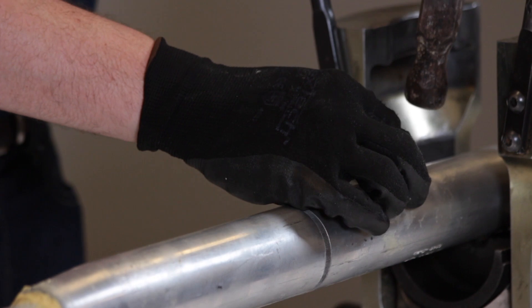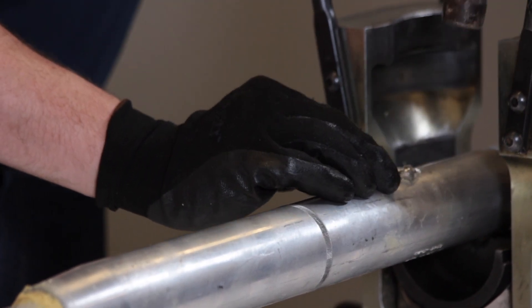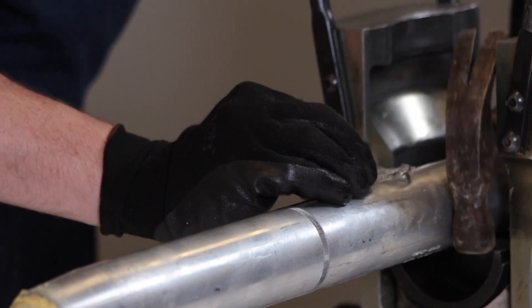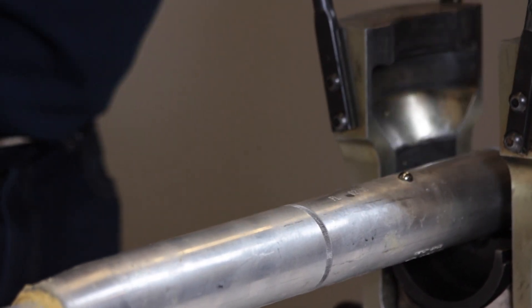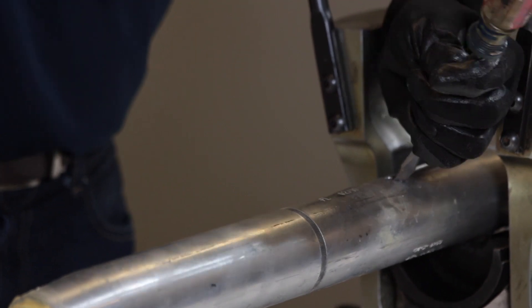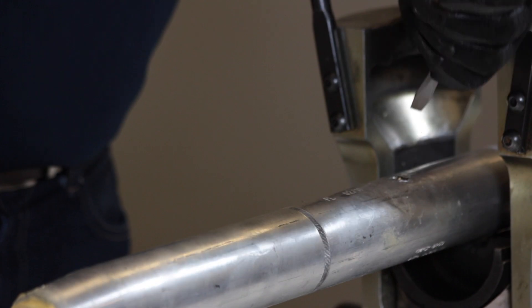Seal the filler hole by inserting the stainless steel ball. The plastic bag containing the ball can be used to help position it. Tap the ball into the filler hole using a hammer and remove the plastic bag if used. Next, peen over the aluminum edges of the filler hole with a hammer and flathead screwdriver to secure the ball into place.